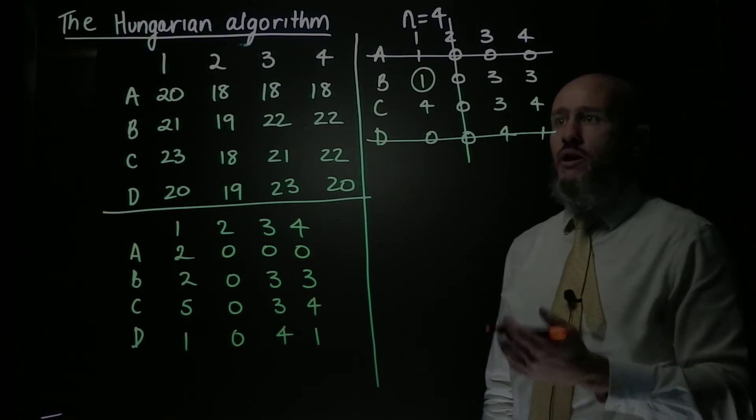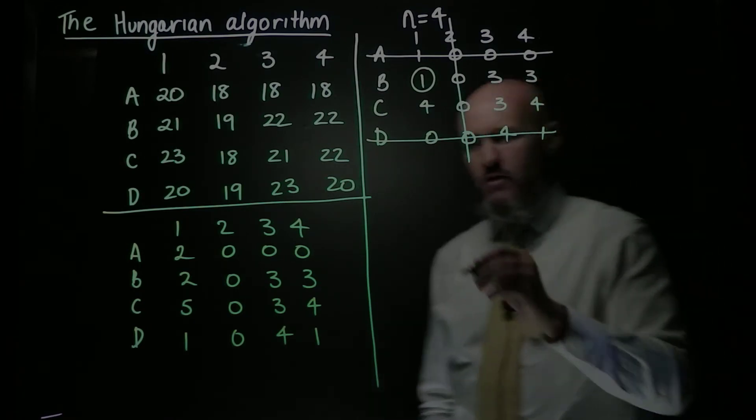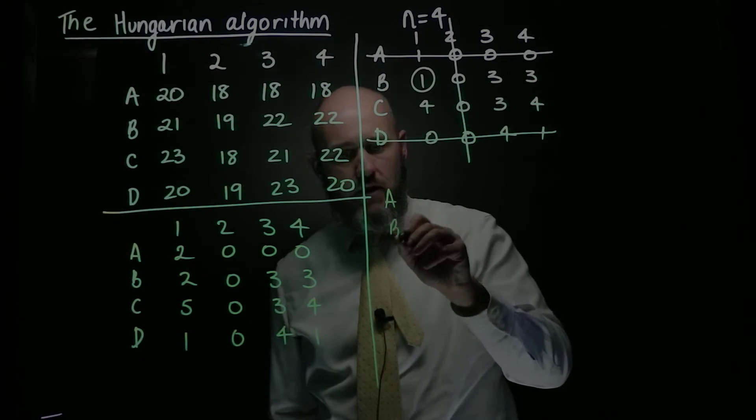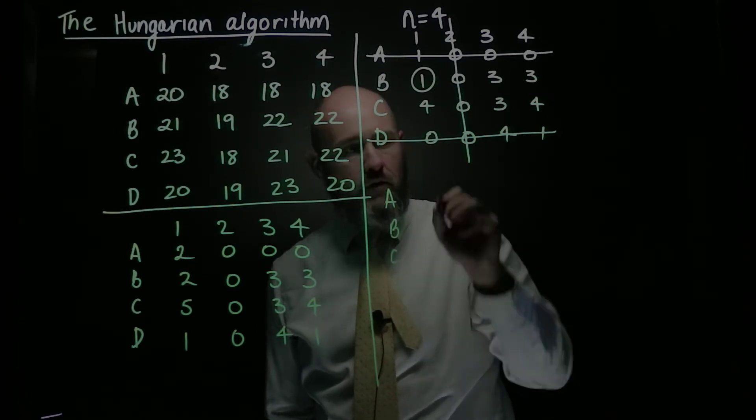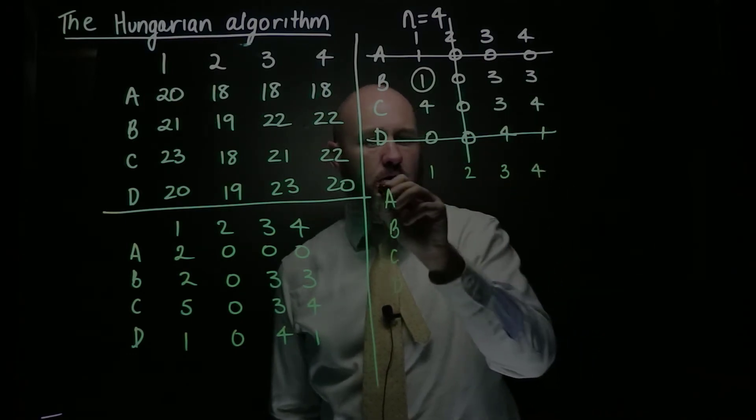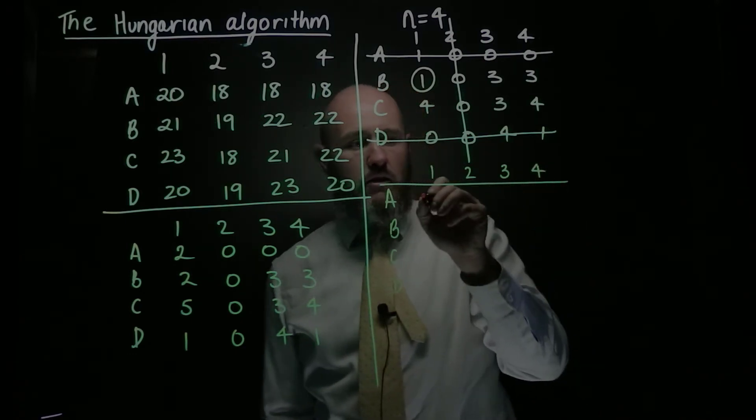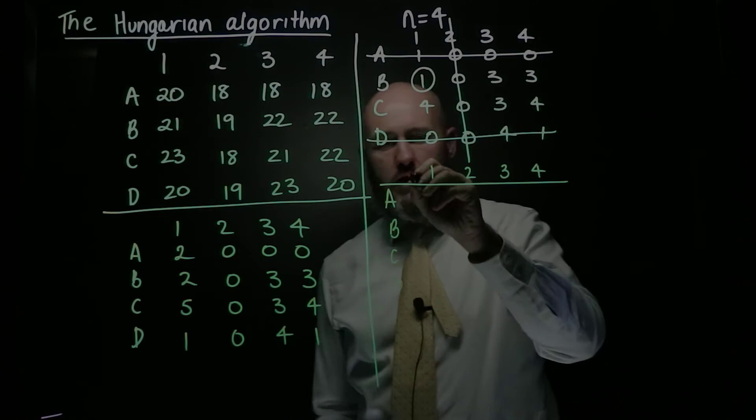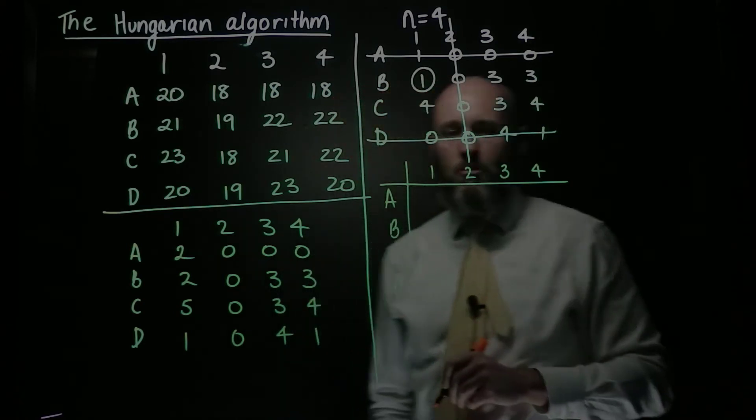And now I'm going to go through and add the 1 to my double covered, so I'm just going to set it up first. A, B, C, D, 1, 2, 3, 4.